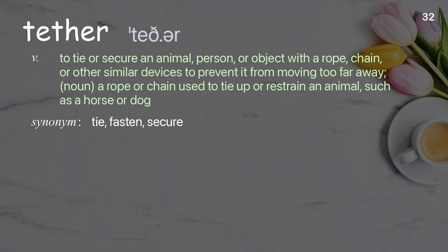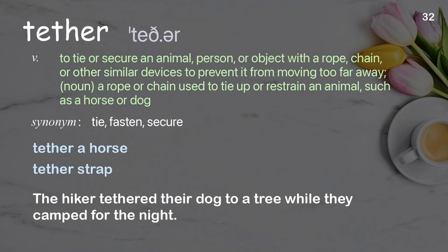Tether: to tie or secure an animal, person, or object with a rope, chain, or similar device to prevent it from moving too far away; as a noun, a rope or chain used to restrain an animal. Examples: tether a horse, tether strap. The hiker tethered their dog to a tree while they camped for the night.